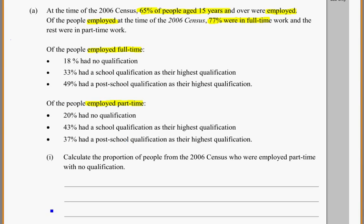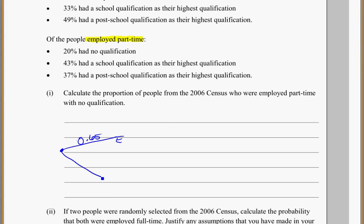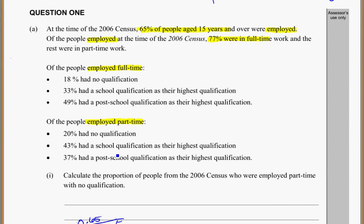Starting at the start, we've got a census, and there's 65% of the people aged 15 or older are employed. So that means I've got employed. I might just put that as an E for employed, and that's 0.65 of them. So that means I have 0.35 of the population that is not employed. That's our first break-up. 65% of the people are actually employed.